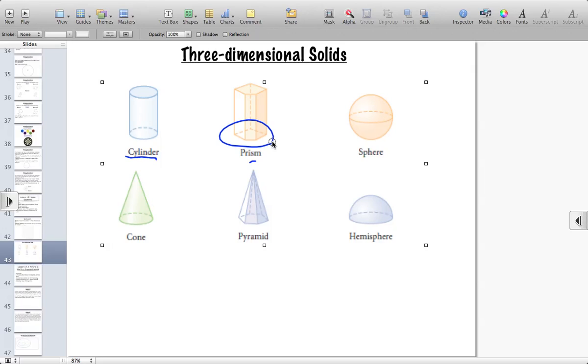Then we have spheres. A sphere is a three-dimensional circle. Basically, everything is equidistant from the center. Half of a sphere is called a hemisphere.